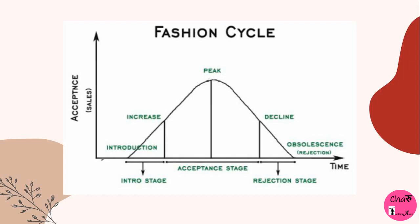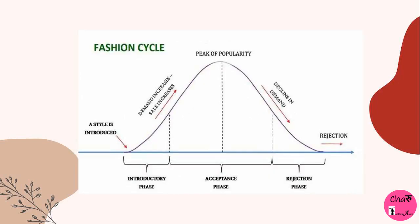The fashion cycle has five stages: introduction, rise, peak and maturity, decline, and the last one is obsolescence, which we call rejection. Here we can see the new style being introduced on the graph.